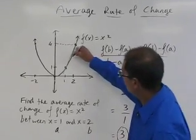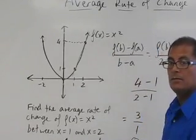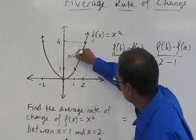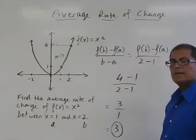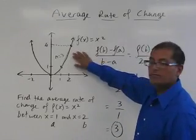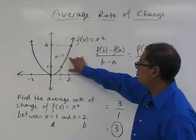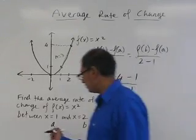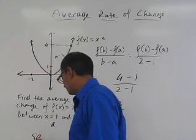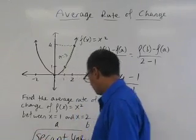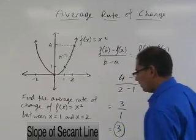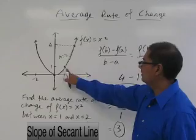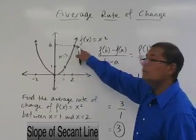And so that is the slope of this green line. The slope of this green line would be 3. Now sometimes this line here that we just found the slope of that's joining these two points, we call that the secant line. So that's a term that you're going to hear. And so what we just found was the slope of that secant line that joins x equals 1 to x equals 2.